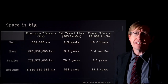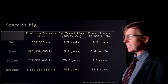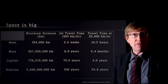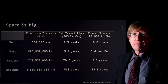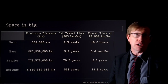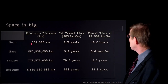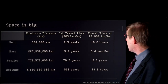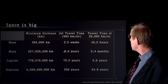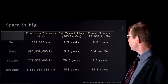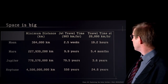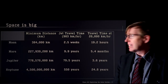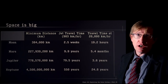There is a challenge, however — it is hard to get there because the distances are so great. The moon is the closest body to us, only 384,000 kilometers away. Traveling in a jet at around 1,000 kilometers an hour, it would take you two and a half weeks to get to the moon. Mars would take nearly 10 years in a jet at its closest approach. Jupiter would take almost 80 years, and Neptune 550 years traveling at jet speeds.